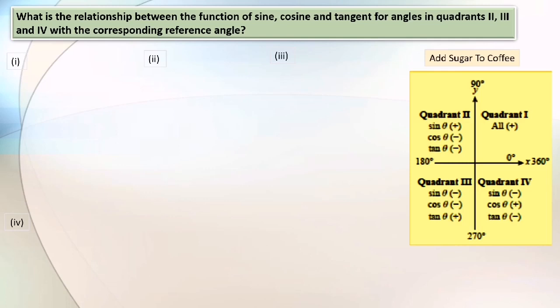In the first quadrant, all values of sine, cosine and tangent are positive. In the second quadrant, only sine theta is positive. In the third quadrant, only tangent theta is positive. In the fourth quadrant, only cosine theta is positive.